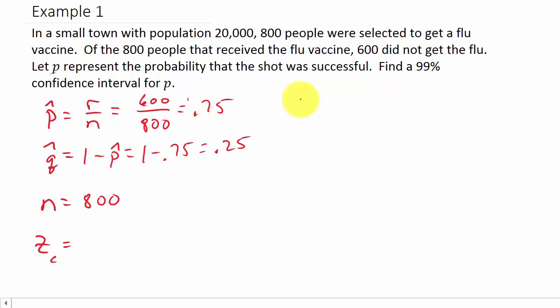We need to make sure that N times P hat, which is 800 times 0.75, equals 600, which is greater than 5. And N times Q hat, which is 800 times 0.25, is 200, which is greater than 5. So both are greater than 5, so we can use the standard normal curve to get our Z sub C.